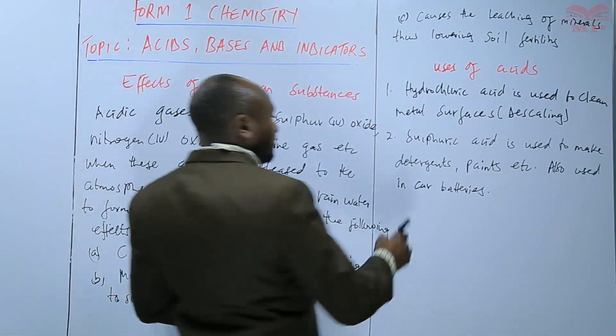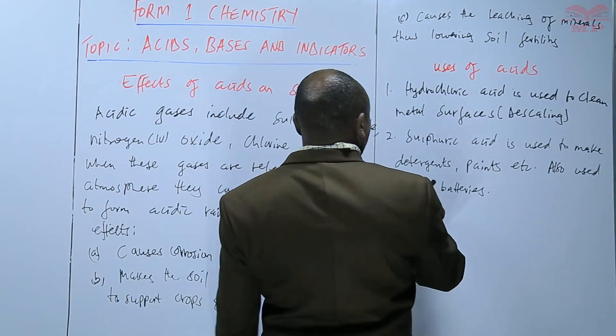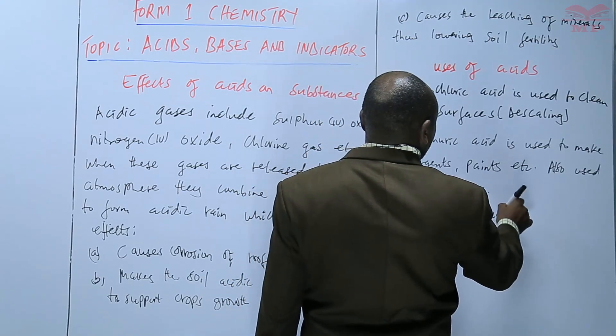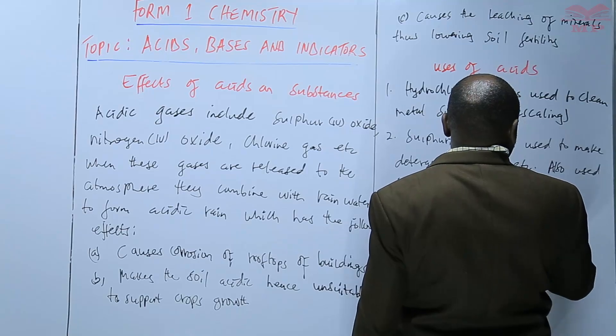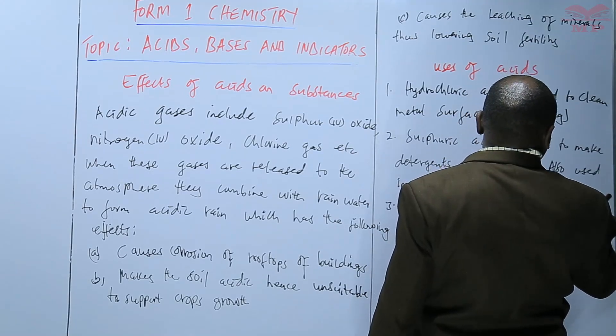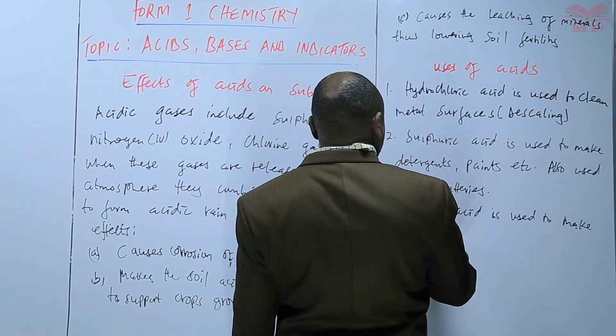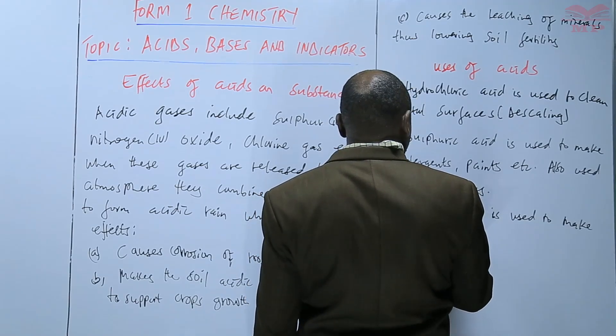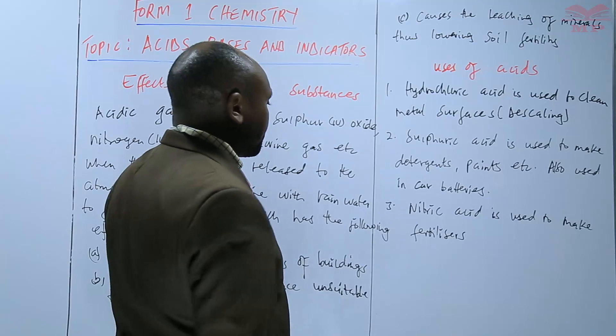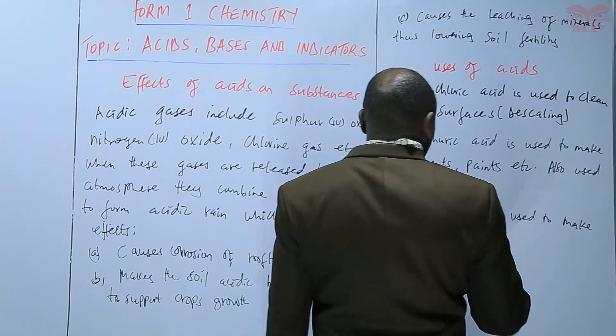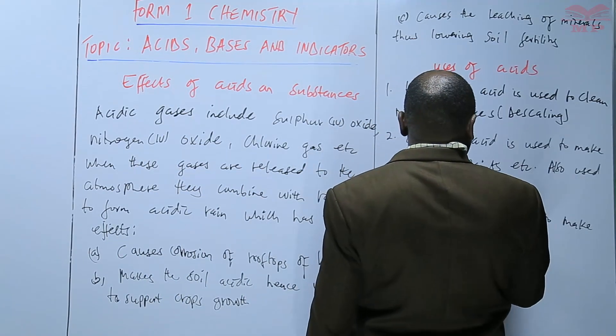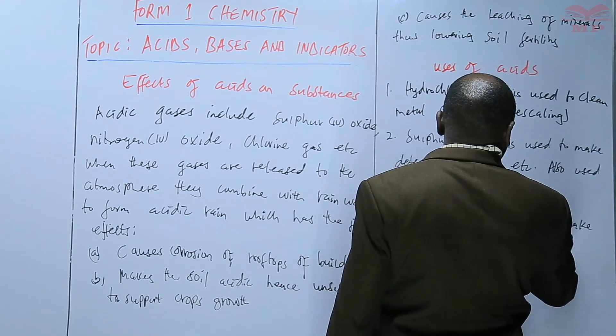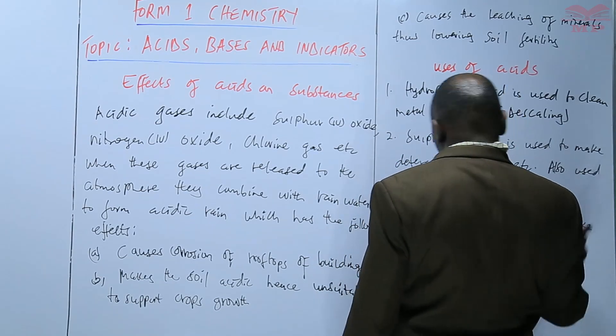And then we have nitric acid is used to make fertilizers. It is used to make fertilizers, dyes and paints.